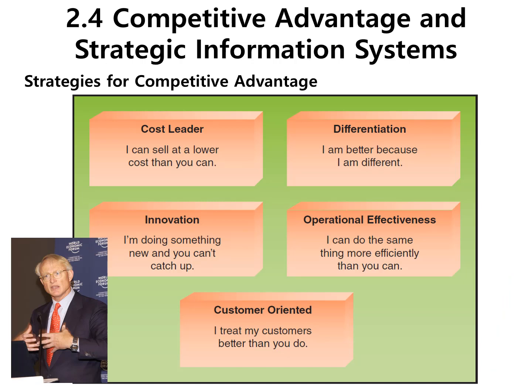Professor Porter has another contribution: strategies for competitive advantage. Dr. Porter had three strategies, and your book author adds two, for a total of five: cost leadership, differentiation, innovation, operational effectiveness, and customer orientation. We develop strategic information systems based on these attempts at creating competitive advantage. I can argue that Google, for example, has none of these strategies — Google's strategy is that they are fantastic at software development, and so they have that niche.